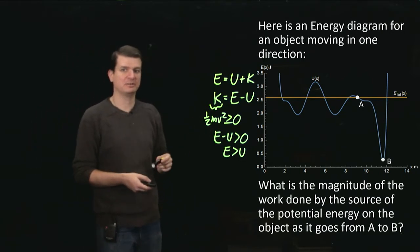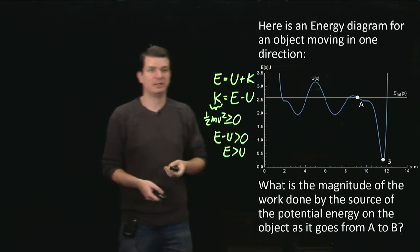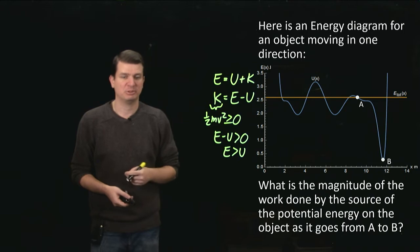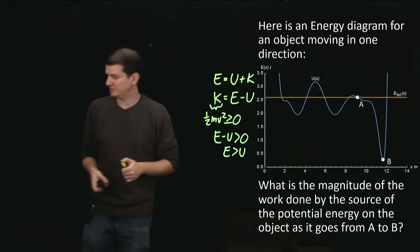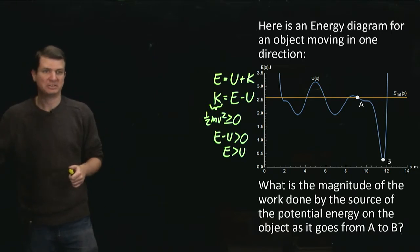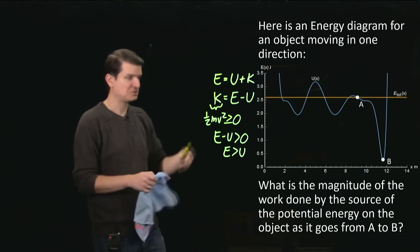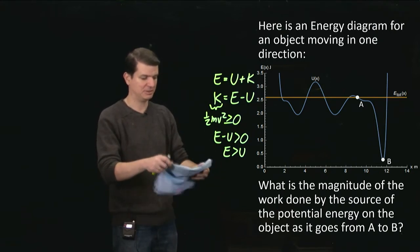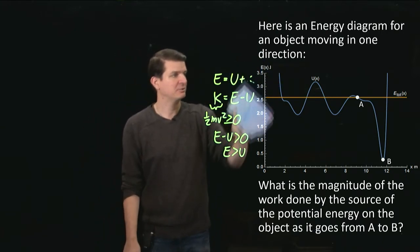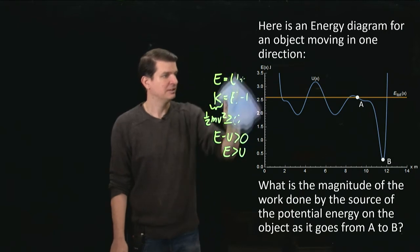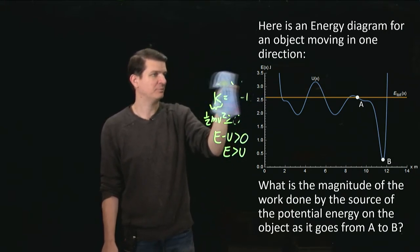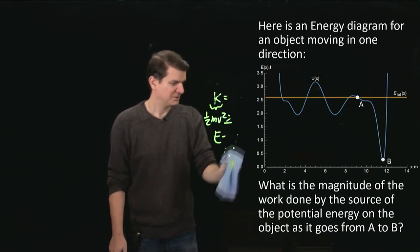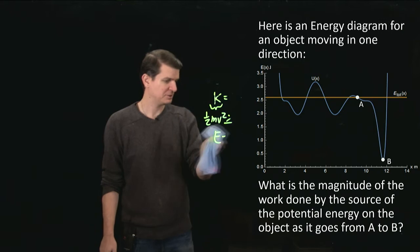All right. So now, since it's oscillating between those, we know that the farthest left we get is point A, and that point where we have the lowest potential energy, and therefore the maximum kinetic energy, is point B. So we want to know the magnitude of the work done by the source of this potential energy on the object as it goes from A to B. So first off, what does that question mean? Well, we're asking about how much work does the force that gives rise to that potential energy do? So if this was gravitational potential energy, then the work that we're now considering is how much work does gravity do as it makes the ball roll down the hill from sitting up there at point A and getting all the way down to point B.